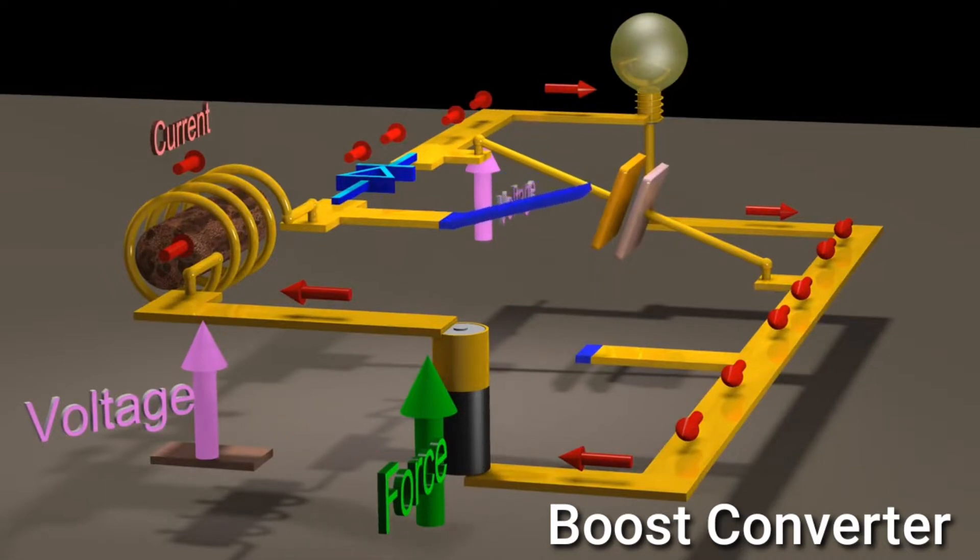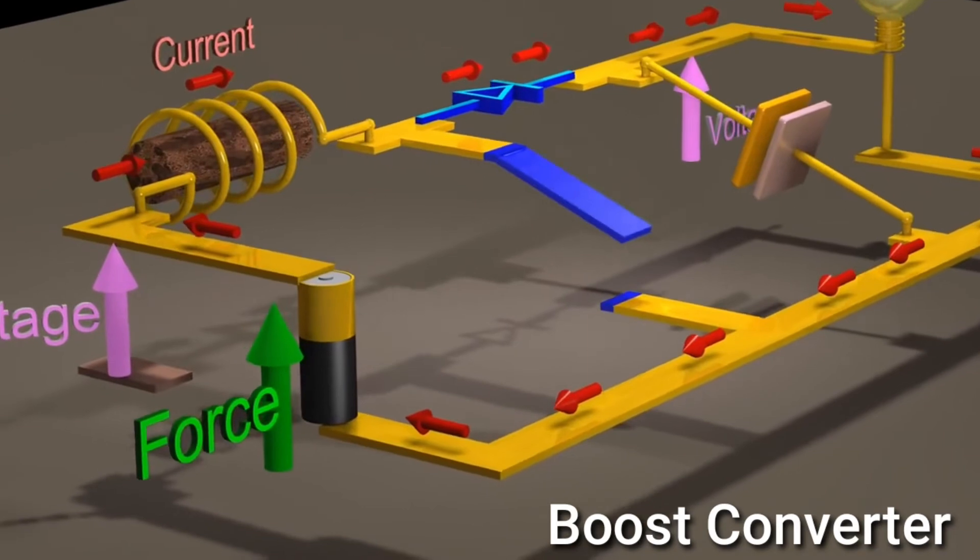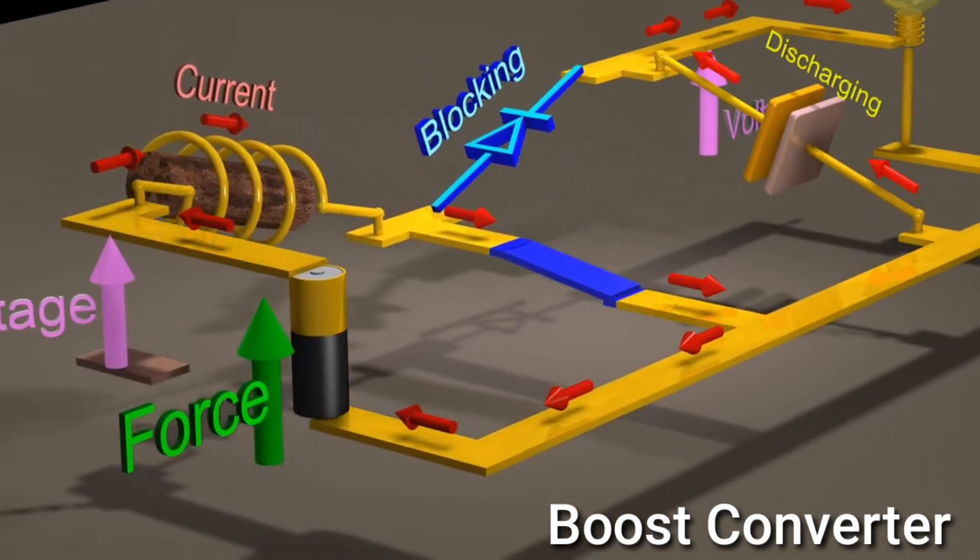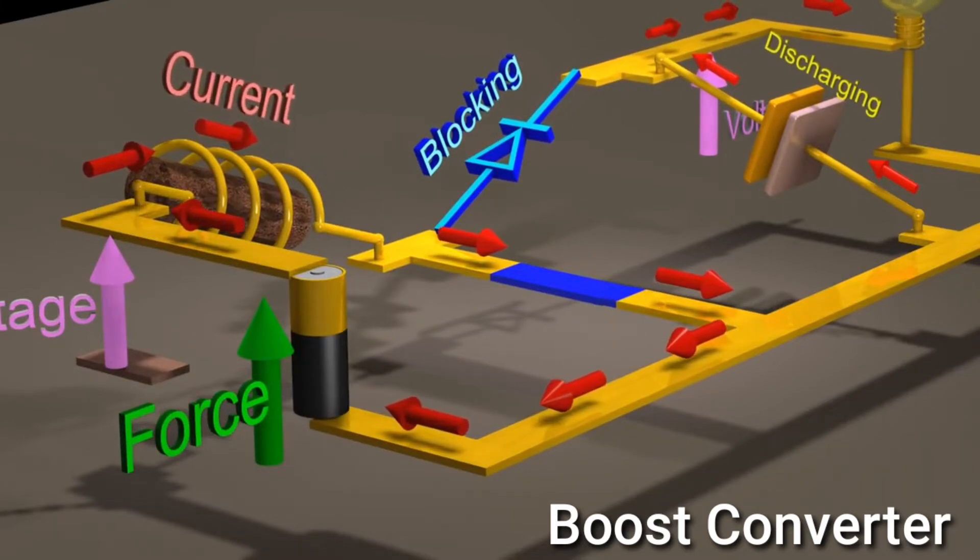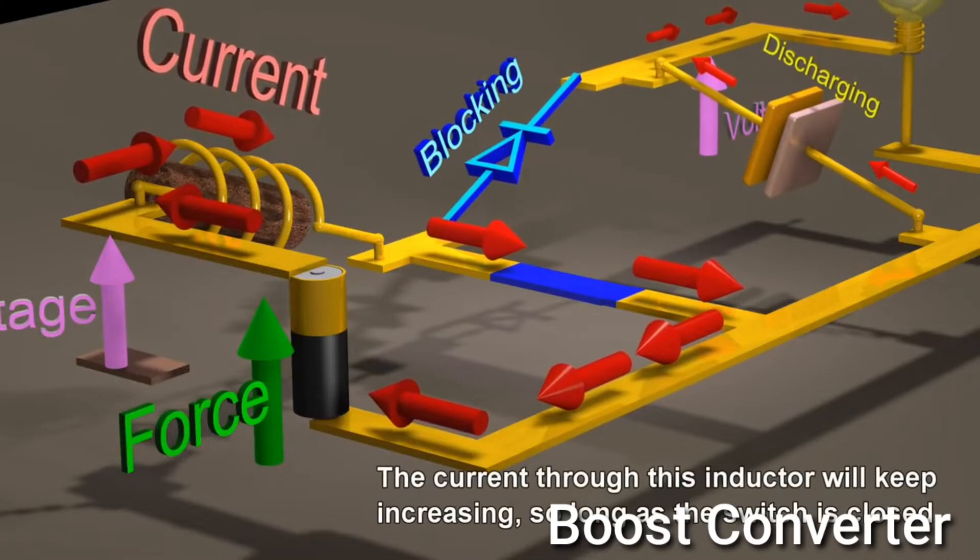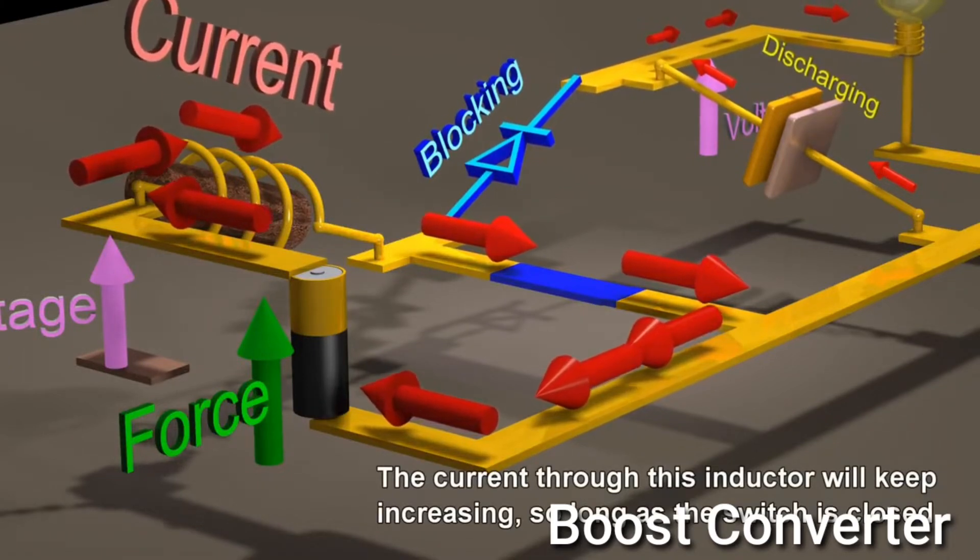If we close the switch, we will cause a DC voltage to appear across the inductor. The current through the inductor will keep increasing, so long as the switch is closed.